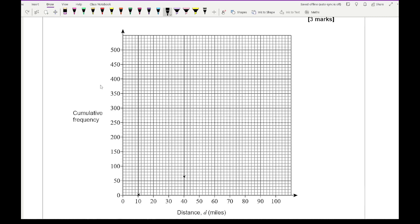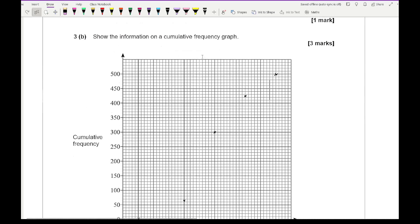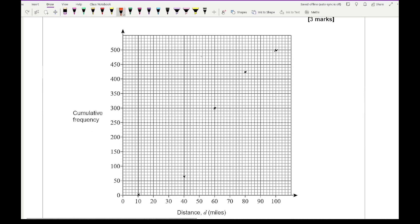Then at 60 it is at 300. Then at 80 it is at 425 which is in between, and then at 100 it's at 500. Because it says to plot a cumulative frequency graph we're going to join these up with a nice smooth curve. Make sure your curve goes through all the points that you've plotted.